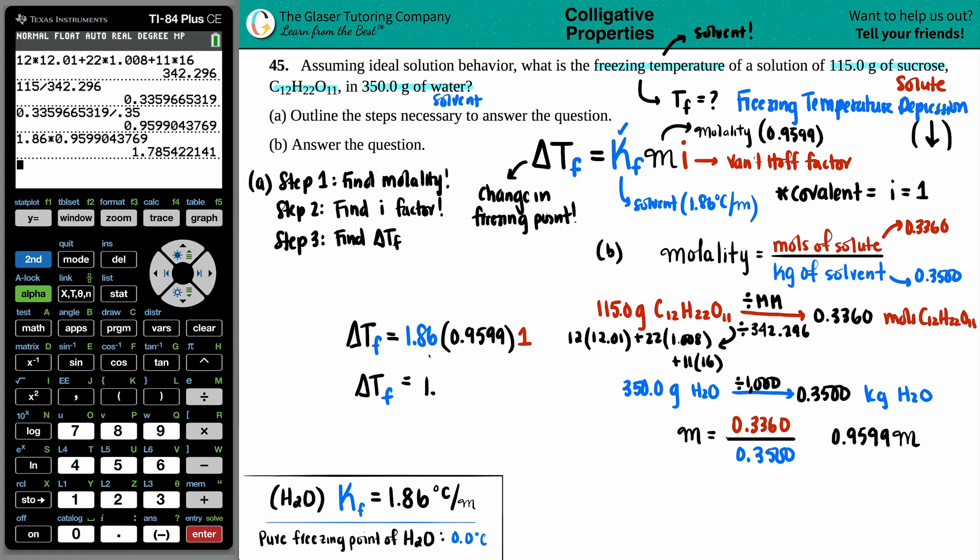If you get a change in temperature of like 50, 100, 200, go back, something happened, your changes in temperatures should be very small. And I know that it's degree Celsius because one of the units for your KF is Celsius. So Celsius goes with Celsius. But keep in mind, this is the change. We want the actual freezing temperature. So I got to start where I was.